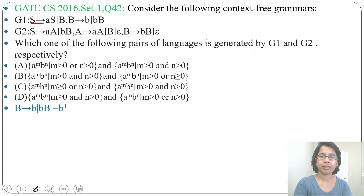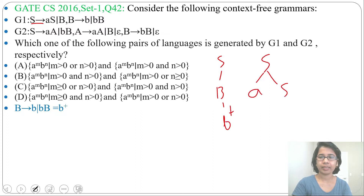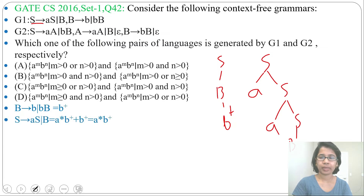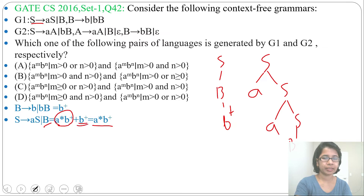Next, from S what can you generate? From S you can generate B, and from B you can generate any number of B. Then from S you can generate AS, and again AS, then B, and any number of B. So the regular expression for S will be A Kleene closure, B positive closure, plus B positive closure — which simplifies to A Kleene closure, B positive closure.